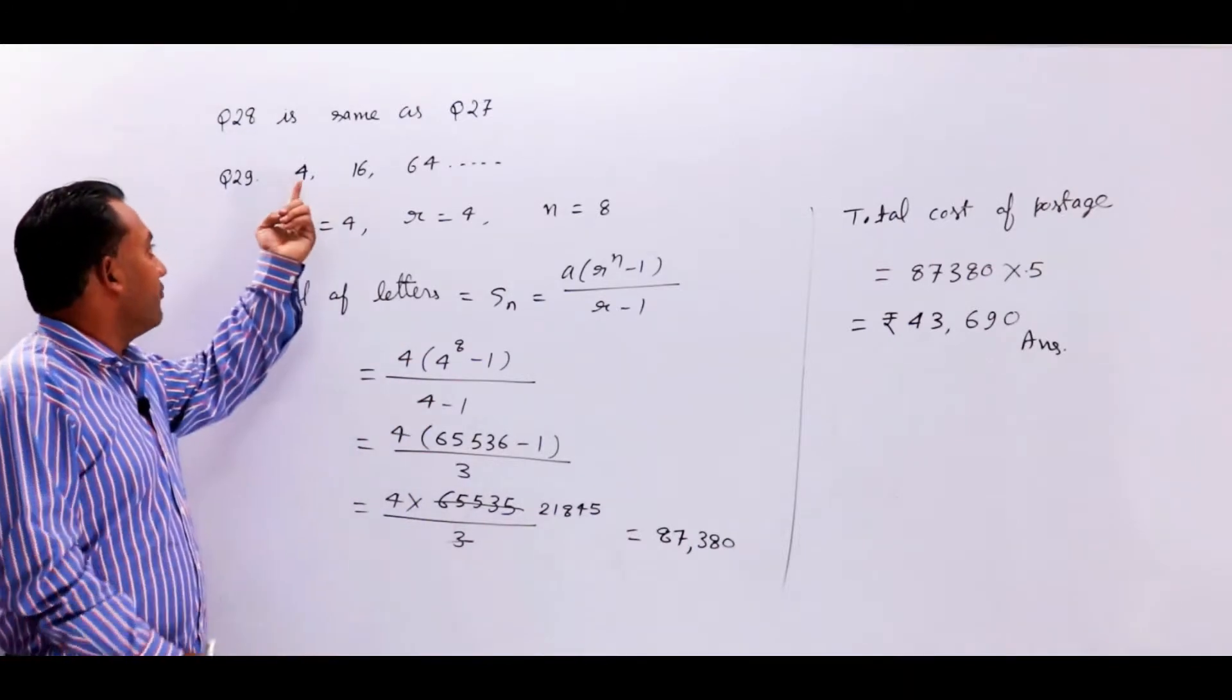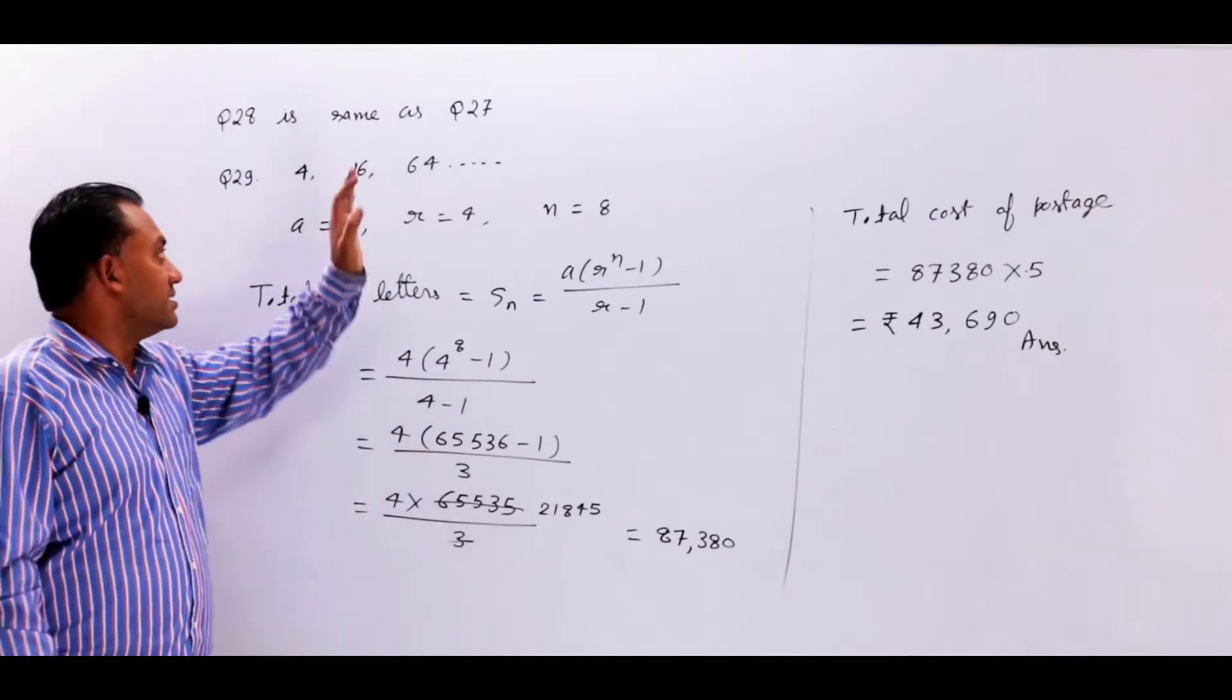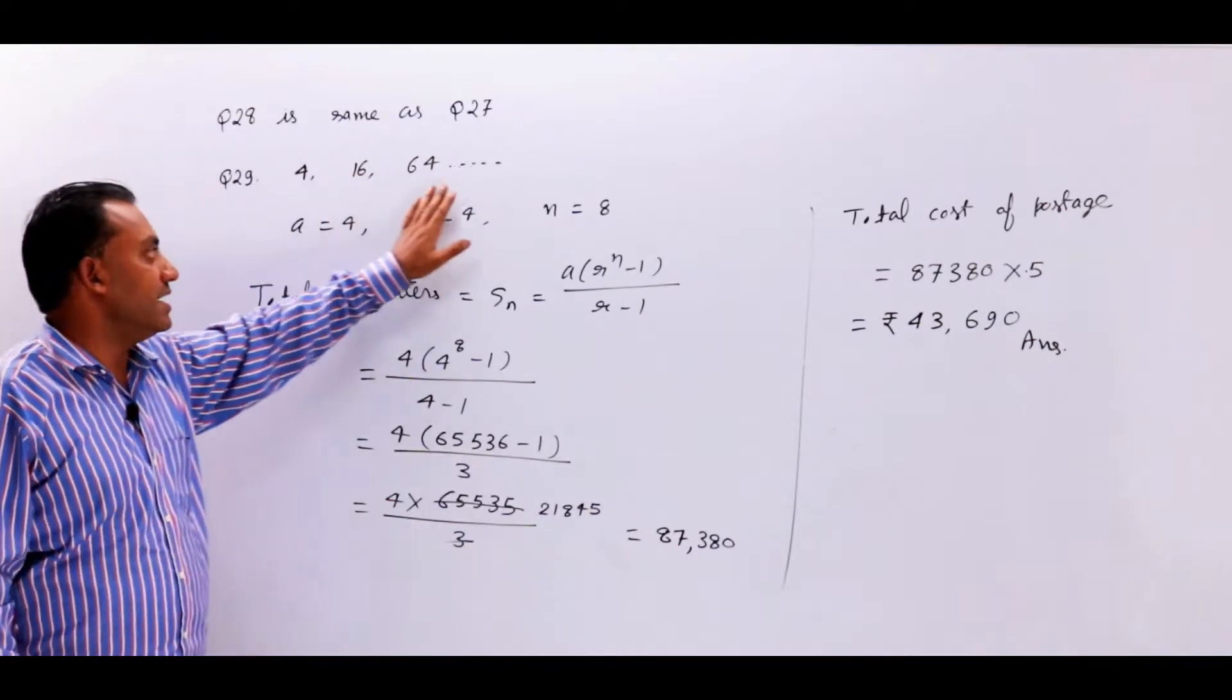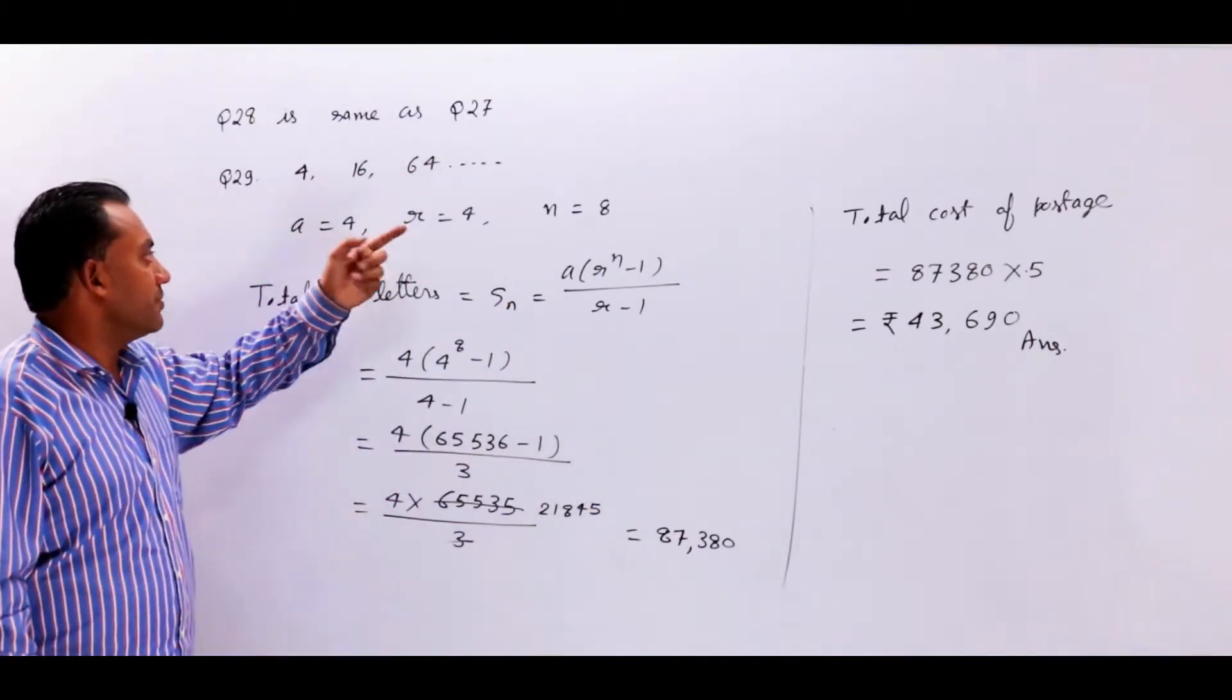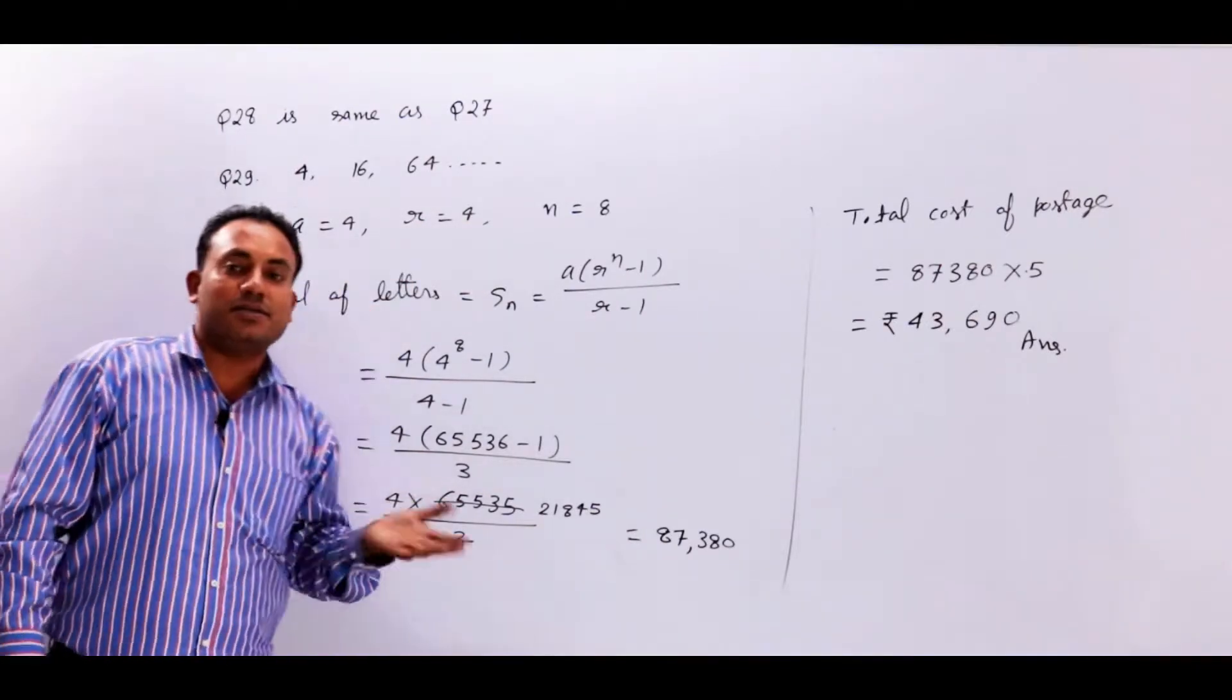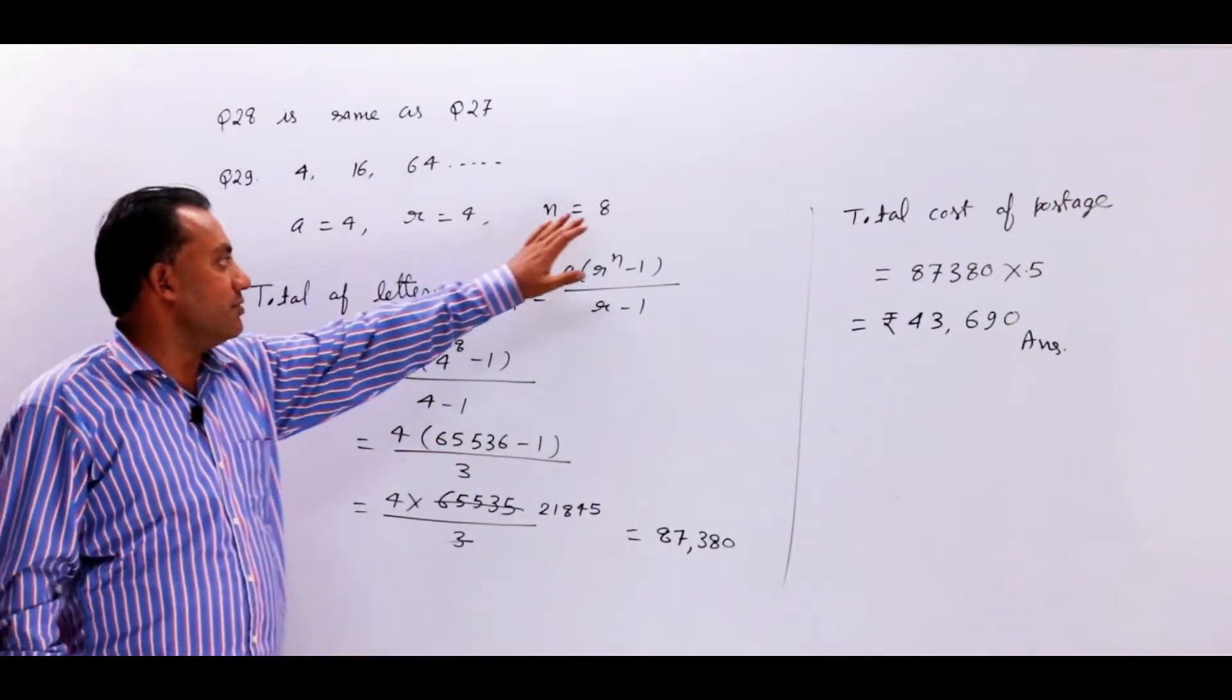The third set will be 64. So you can see here a geometric progression will be made. The first term is 4, and because we have to know that 8 sets will be full, so n is equal to 8.